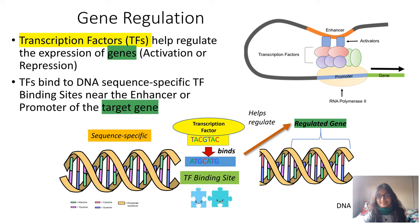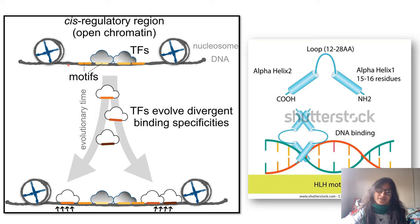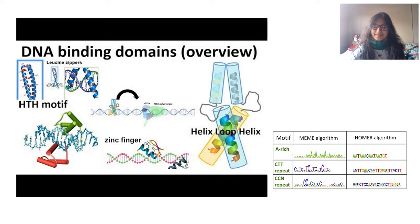Where the transcription factors are binding, they bind to these motifs. For example, if we look at an HLH motif along the DNA, we can figure out where it binds — it has this sequence-specific motif that it binds to along the DNA. This is another example where we have an HTH motif — another transcription factor — and we're just trying to figure out where does it bind along the DNA, what does that motif look like, where is it likely to bind.